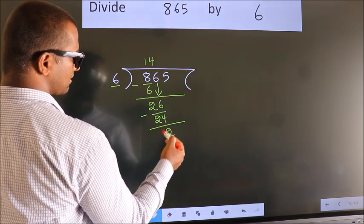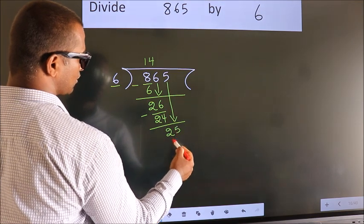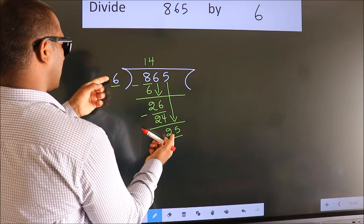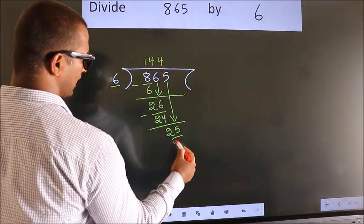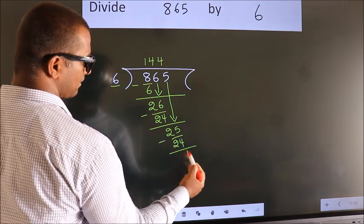After this, bring down the beside number. So, 5 down. So, 25. A number close to 25 in 6 table is 6 fours 24. Now, we subtract. We get 1.